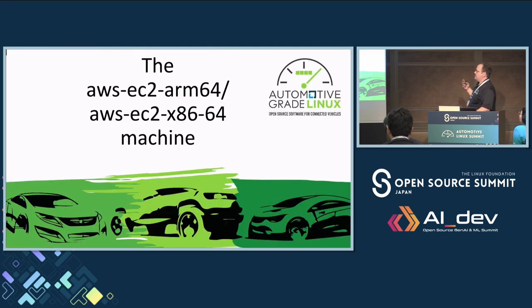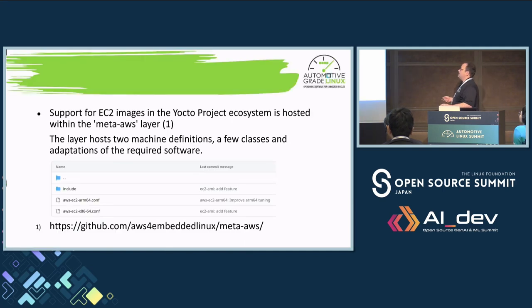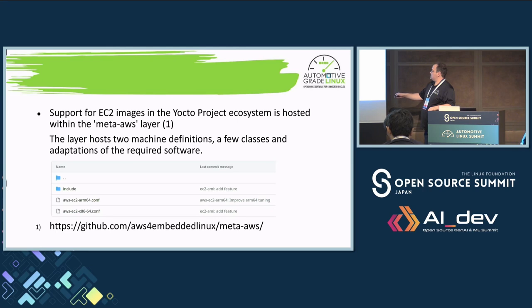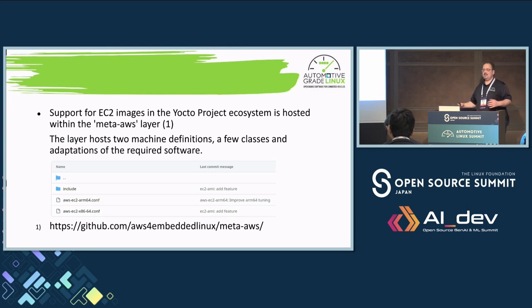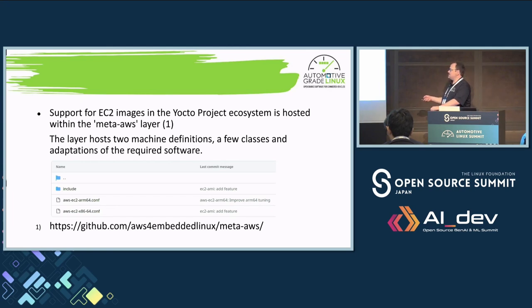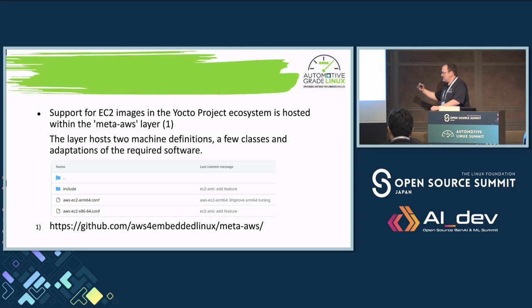So what machines do we have available? We build upon the meta-AWS layer that's hosted and developed by the AWS IoT group, and they expose two machines: an x86 machine and an ARM64 machine. Those are very standardized machines that both boot with UEFI in the same way — very streamlined, very standardized. In theory, this is essentially ARM System Ready, so you could already throw that on a System Ready machine with probably little tweaks. The upstream repository is here; we embed the matching version into the AGL tree already, as you will see later.